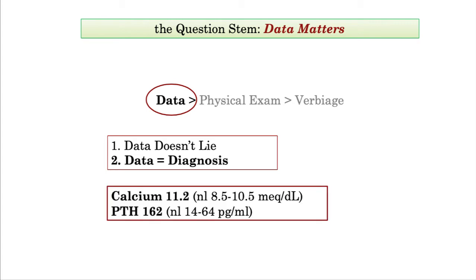If, in this example, you have a question where the data demonstrates hyperkalemia with a high PTH, you are all done. The diagnosis is primary hyperparathyroidism, and as you ponder the answer choices, you need to select the one that most closely aligned with this diagnosis, regardless of anything else in the question stem, and no matter how tempting the wrong answer choices may seem.